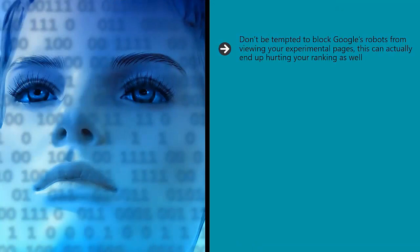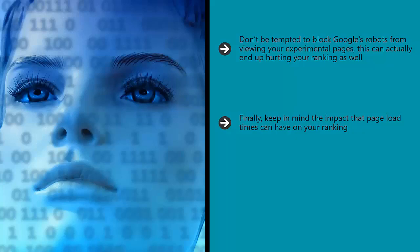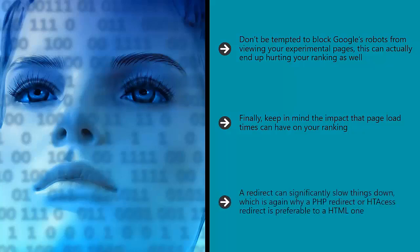Don't be tempted to block Google's robots from viewing your experimental pages — this can actually end up hurting your ranking as well. Finally, keep in mind the impact that page load times can have on your ranking. Page load times are one of the key factors Google now looks for when determining the ranking of a site, and if your load time is very slow, then it will hurt your position. A redirect can significantly slow things down, which is again why a PHP redirect or HT access redirect is preferable to an HTML one. You should also consider this factor when looking at other tools that run split tests.